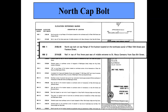I've actually seen elevation certificates where under the benchmark it just said 'spike in tree' — didn't say oak tree, pine tree, which tree, or where the tree is located. Just said it was a spike in a tree.